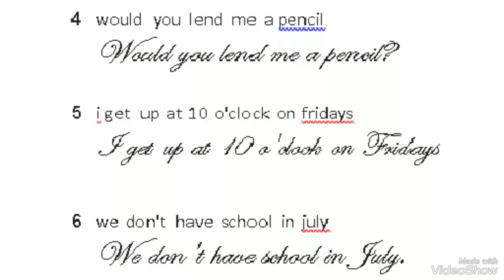Number 5: I get up at 10 o'clock on Fridays. The fault lies in the capitalization of the pronoun 'I' and the name of the day 'Friday'. In English, the pronoun I should always be capitalized regardless of its position. And the names of days of the week should be capitalized. The corrected version is: I get up at 10 o'clock on Fridays. Number 6: We don't have school in July. The pronoun 'we' should be capitalized at the beginning of the sentence, and the name of the month 'July' should always be capitalized. The corrected version is: We don't have school in July.